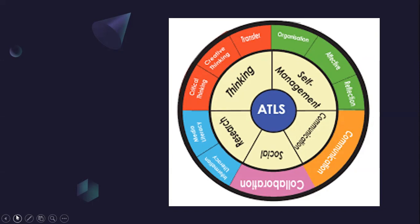You will also research information in order to gather information and reflect your perspective accordingly. So in each and every unit, we'll only be covering two. For instance, social collaboration and perhaps communication, or research and thinking, or self-management and communication. It is an ongoing cycle — you'll experience all the ATL skills in each and every year and in each and every discipline.